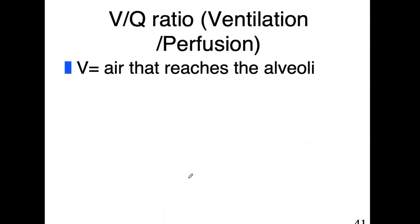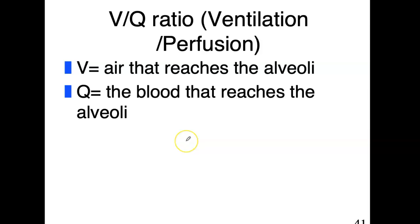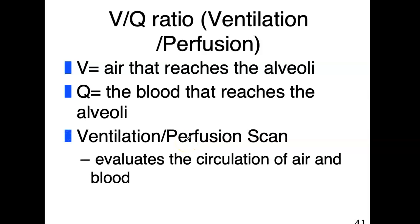You want to be able to match those two and there's a ratio. The V over Q ratio is ventilation perfusion. Ventilation is air coming in; perfusion is blood coming to that area. V is the air that reaches the alveoli, Q is the blood that reaches the alveoli. You could have a ventilation perfusion scan to evaluate the circulation of air and blood to make sure that this level is correct.